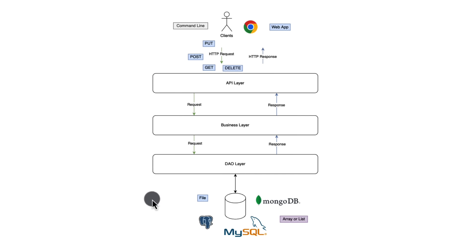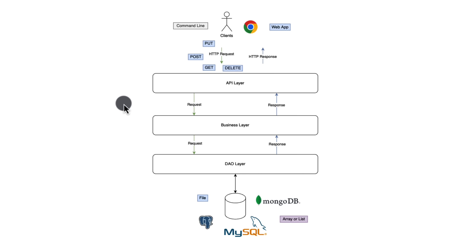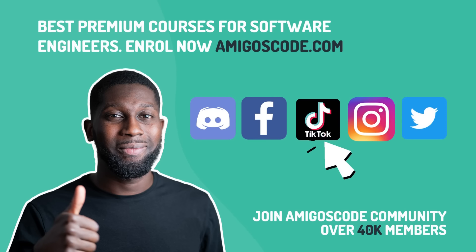Now that we have an overview of Spring Boot, let's put all of this together. Clients will be able to send PUT, POST, GET, and DELETE requests to our API. This flows through the application — through the business layer, the DAO layer, and then to a real database: Postgres running on Docker. This is the architecture you build when creating APIs with Spring Boot, with layers each responsible for one single thing.